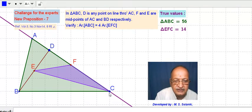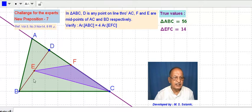7 into 4, but each is equal to 2 units. So this will be 8 and this will be 14 divided by 2, so it will be 56. And area of this is one-fourth, we are seeing.